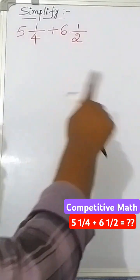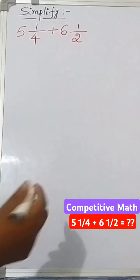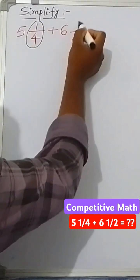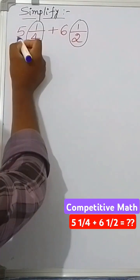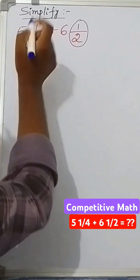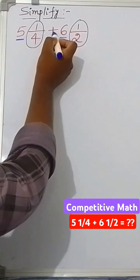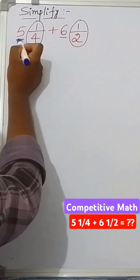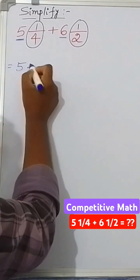We're simplifying the fractions 5 1/4 plus 6 1/2. First, what you have to do is consider the whole number parts. Here it is 5, and here it is 6. You add the whole numbers separately, like this: 5 plus 6.